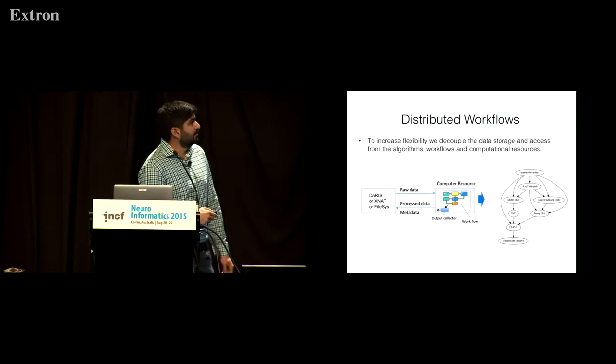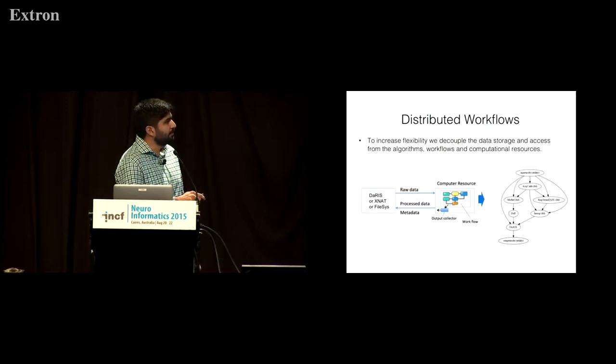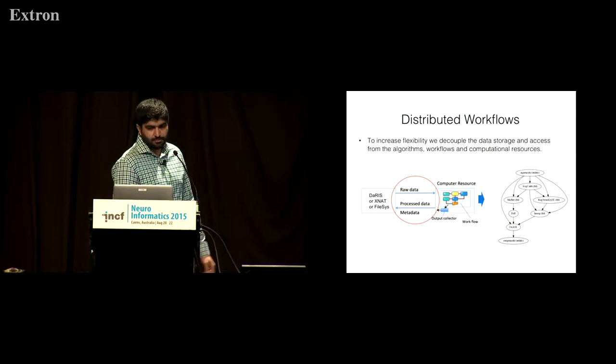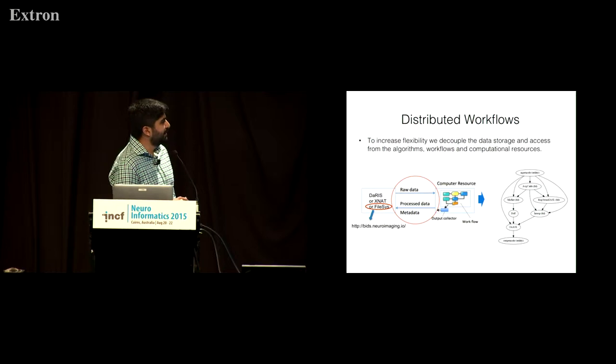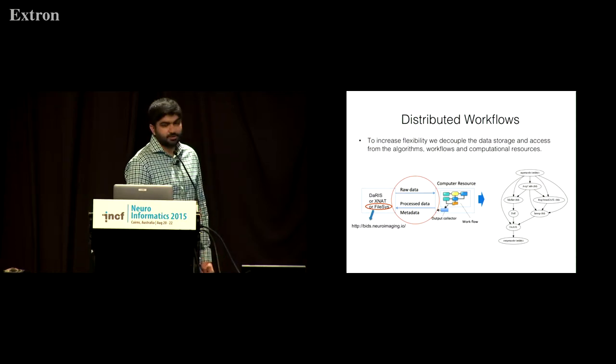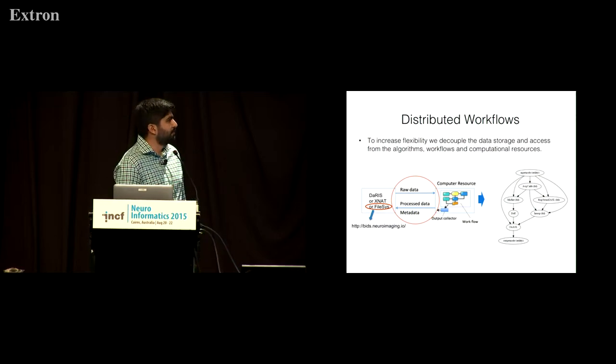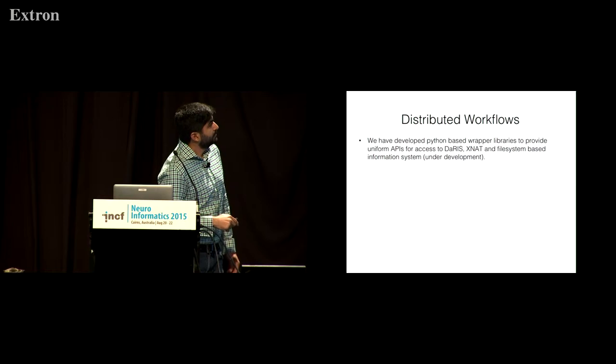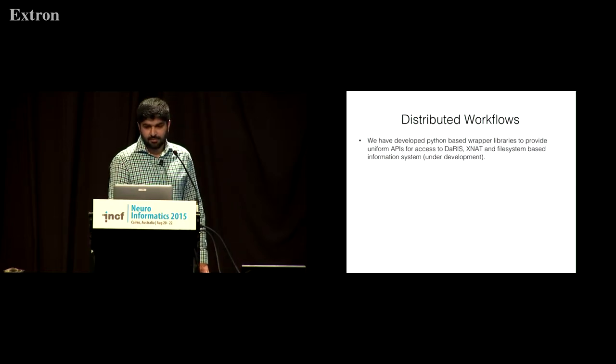So what we came up with is this idea of distributed workflows to kind of increase the flexibility of how we can do the analysis. And the idea basically is that we decouple how and where we store the data from the computational resource and the description of the workflow itself. So the data can be stored in a Daris database, XNAT, or on the file system. And what we've developed is a set of unified ways of accessing these to get the raw data in, run your workflow, get your outputs, and then the processed data and metadata goes back. And this could be a description of what your workflow does. And something I picked up while I've been here at the conference is this BIDS project, which is going to be very useful. And when I get a bit of time, I'm going to make sure that our file system access mechanism starts conforming to the BIDS specification.